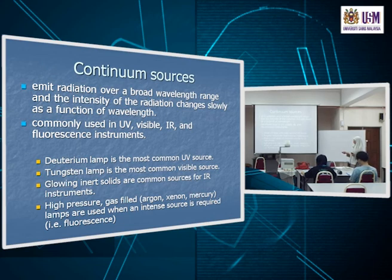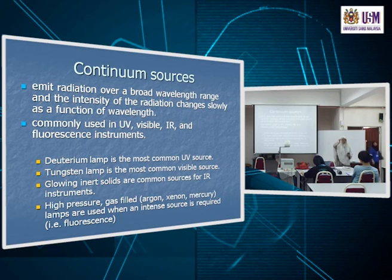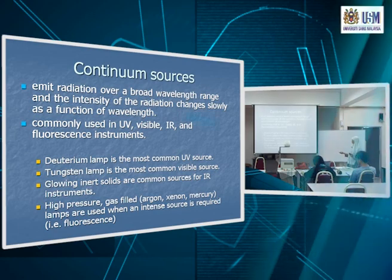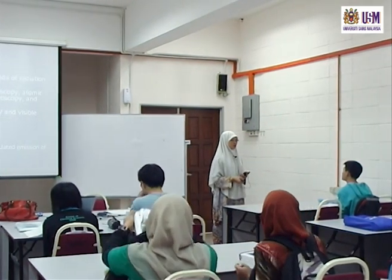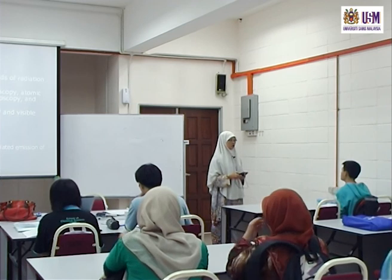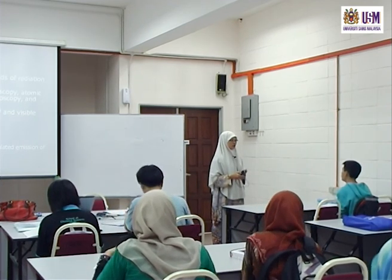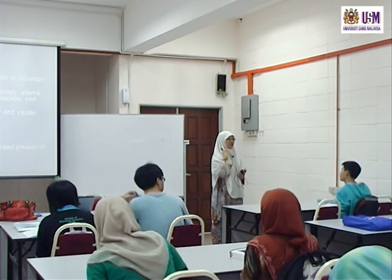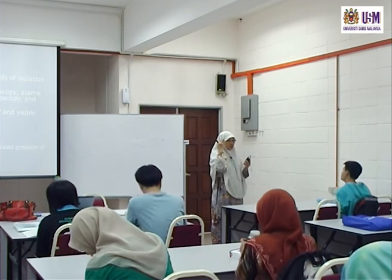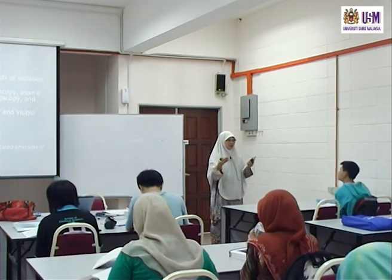The argon, xenon, and mercury lamps have higher intensity — that means at a certain wavelength the amplitude of the electromagnetic wave is a lot higher. Higher intensity means these are used in fluorescence. What big difference do you understand between those two sources in terms of the wavelength of light given out?